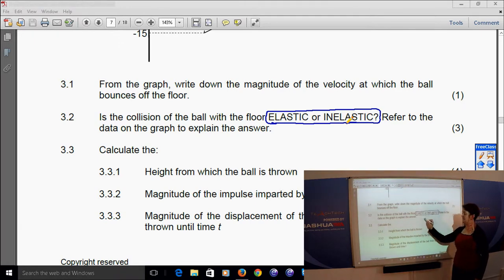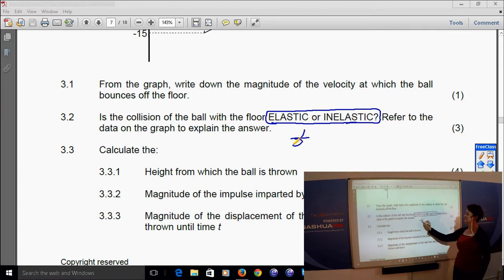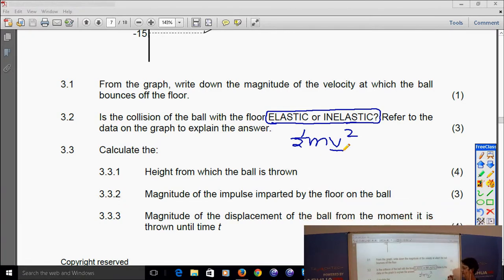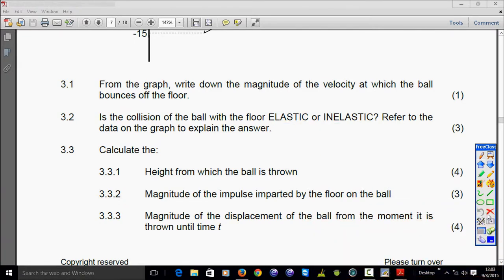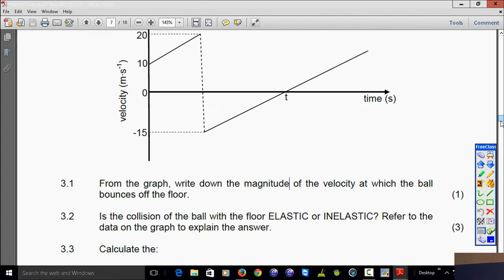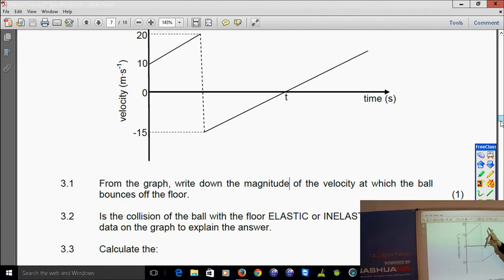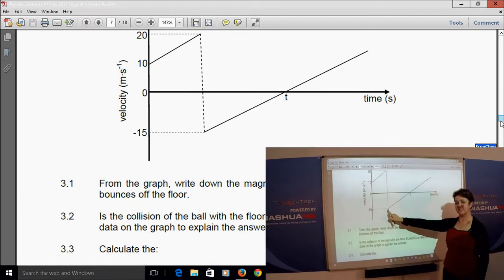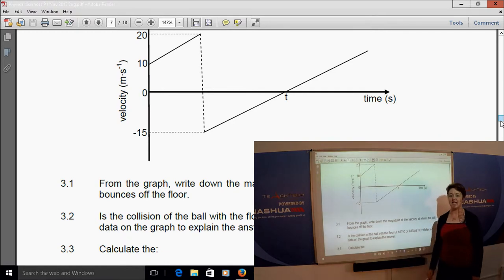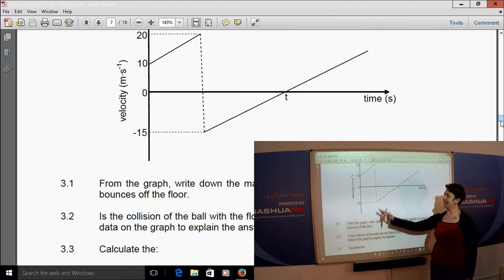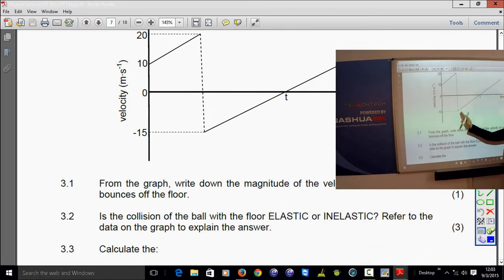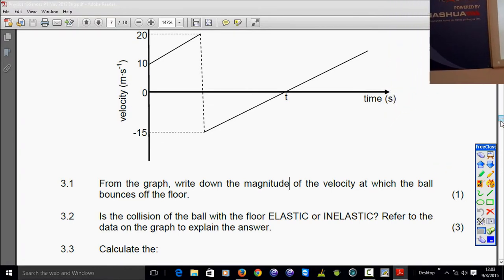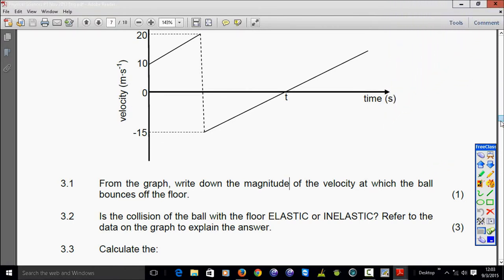And for kinetic energy of mv squared to remain the same, the velocity before and after the collision need to be the same. So if we now go back to our graph, we will see that the velocity hitting the floor and bouncing off the floor are not the same. So it cannot be an elastic collision. It has to be an inelastic collision. And our explanation will be it hits the floor at 20 meters per second. It leaves the floor at 15 meters per second. So inelastic collision, kinetic energy is not the same.